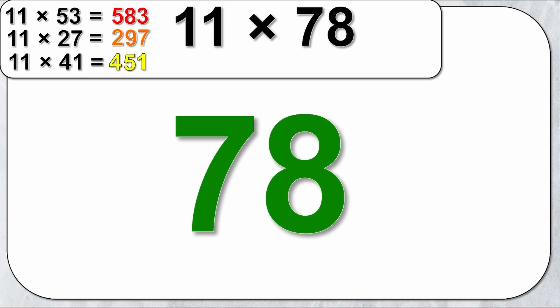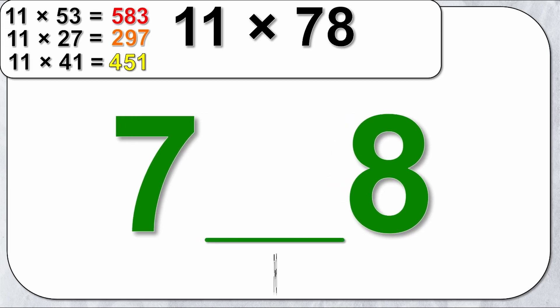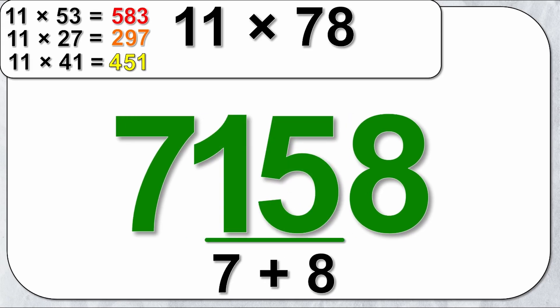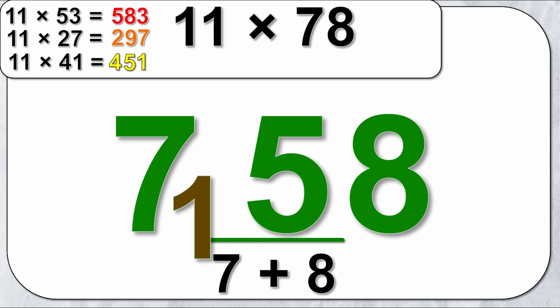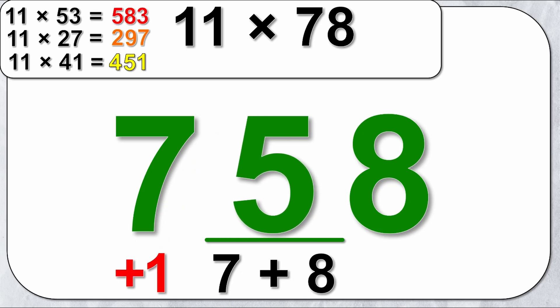Well I write my 78, pull them apart, and the number in the middle is 7 plus 8 which is 15. But 11 times 78 isn't 7,158. That'd be wrong. So I'm going to keep the second number and pull the 1 down and add it to the first number. So in this case 7 plus 1 is 8, and so my answer would be 858.